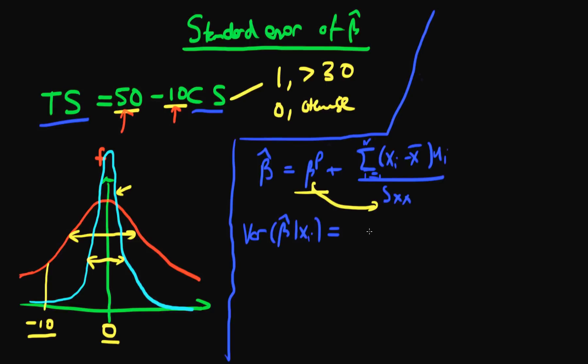So we're left with the variance of beta hat given xi is equal to the variance of this whole stuff on the right hand side which is the sum of i equals 1 to n of xi minus x bar times ui all divided by sxx.